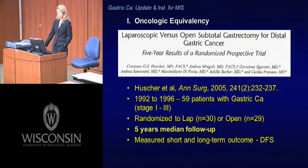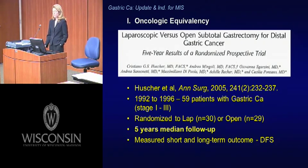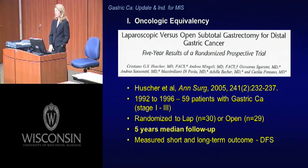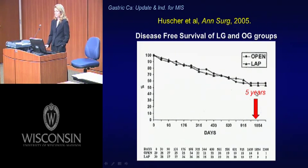Dr. Heuscher's paper from Annals of Surgery 2005 is one of the sentinel papers, especially for the West. He took 59 patients with all stages of surgically resectable gastric cancer — stage 1 through 3 — and randomized them to laparoscopic or open approaches, following them for five years for survival. Short- and long-term outcomes showed the minimally invasive approach had less pain and shorter hospital stay. Most importantly, disease-free survival at five years was equivalent between the laparoscopic and open approaches, setting the stage to confirm this procedure can be performed safely and oncologically equivalently.